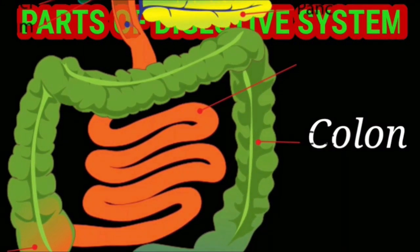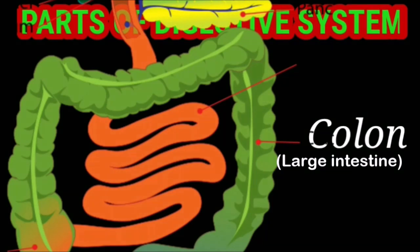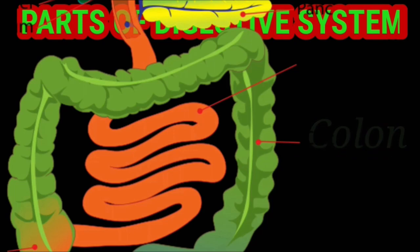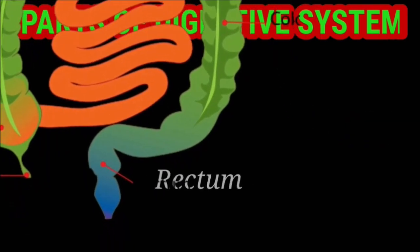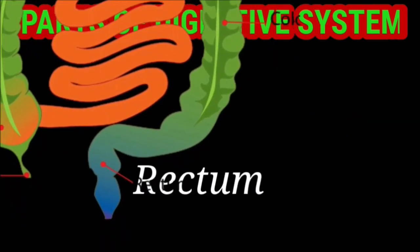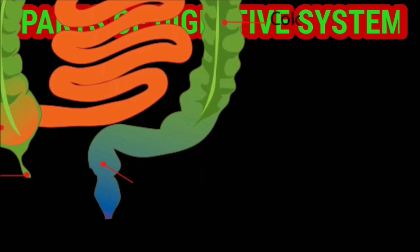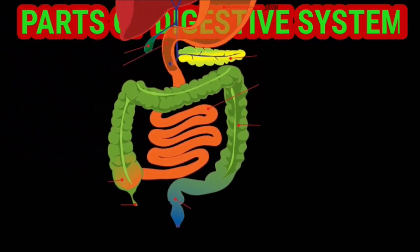The small intestine leads to the large intestine, the length of which is comparatively lesser than the small intestine. It further leads into the rectum and finally opens out through an anal pore, through which the undigested food is excreted.